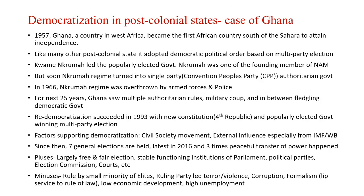Ghana case study: 1957 में Ghana, a country in West Africa, became the first African country south of Sahara to attain independence, from British rule। Like many other post-colonial states, it adopted democratic political order based on multi-party election। Kwame Nkrumah एक charismatic leader थे जिन्होंने national movement lead किया था — he became popularly elected government के chief, just like Nehru। Nkrumah NAM के founding members में से एक बने, Nehru और Tito के साथ — ये पाँच लोग मिलकर 1961 में NAM बनाते हैं।